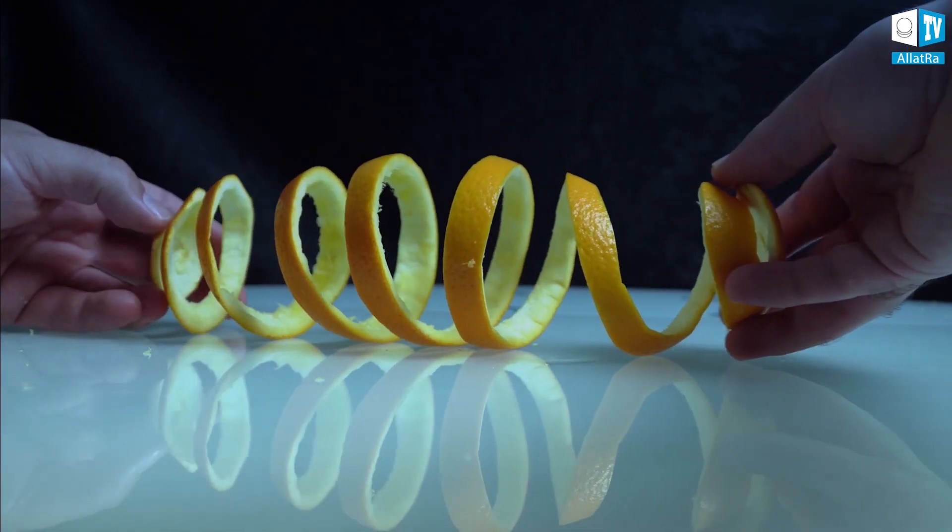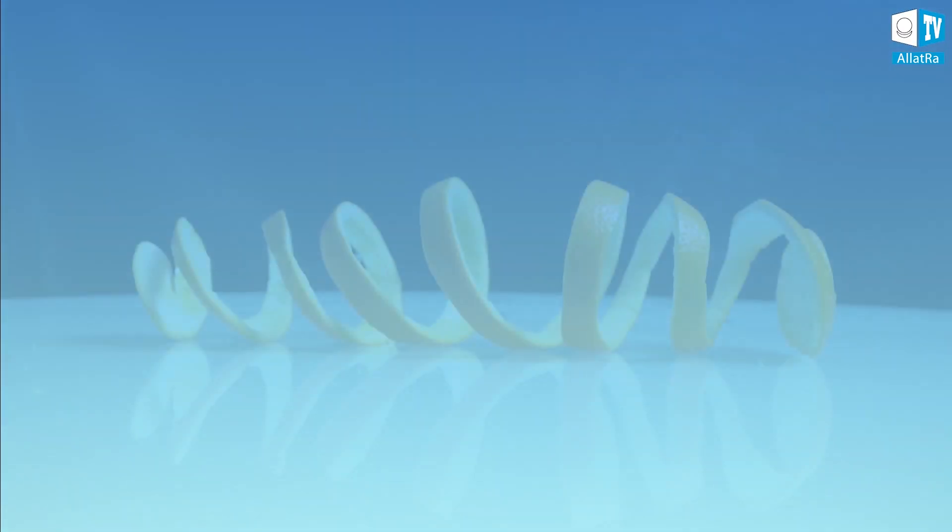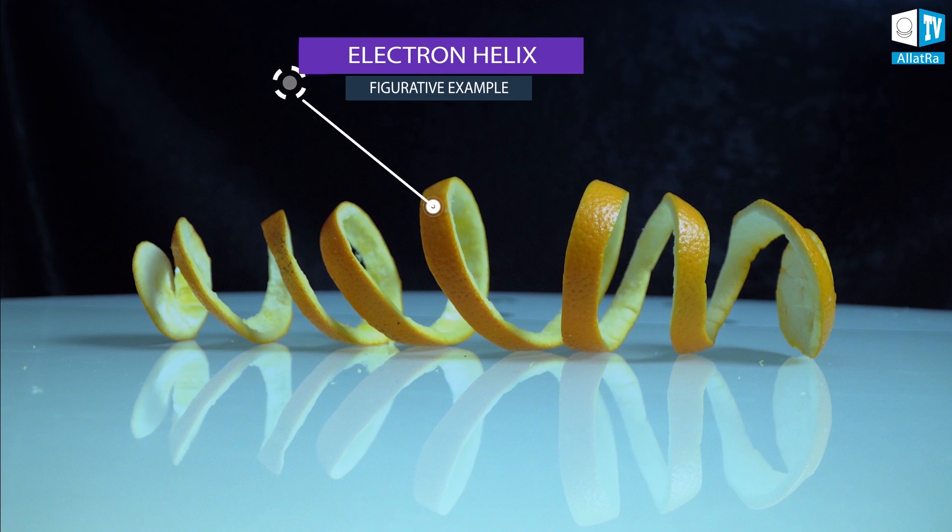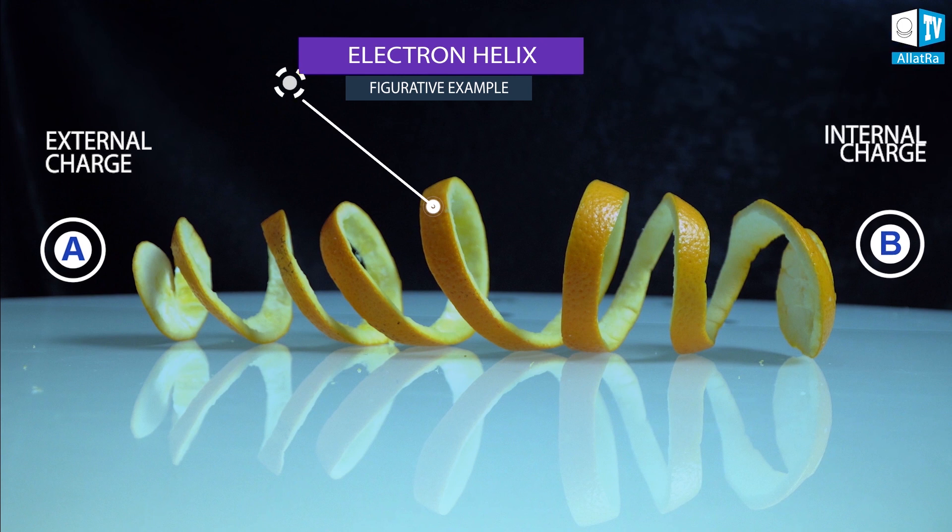So in our figurative example, the orange peel will represent the electron helix, on the surface of which there is an external charge in the area of point A, while the internal charge is in the area of point B on the inside, on the white side of the peel.